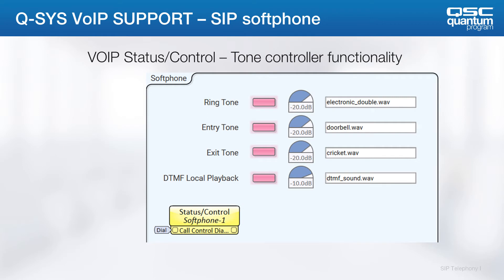The VoIP status and control block acts as a tone controller for all these different tones. In this example, DTMF playback is enabled, ringtone is enabled, and entry and exit tones are also enabled.